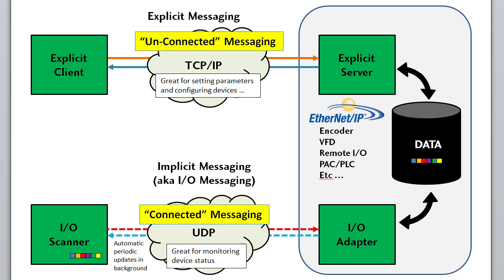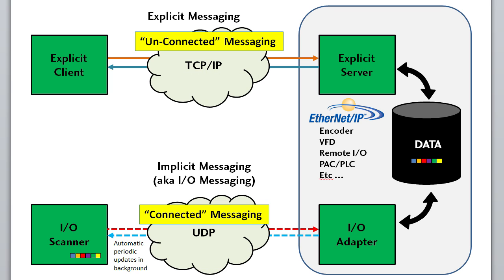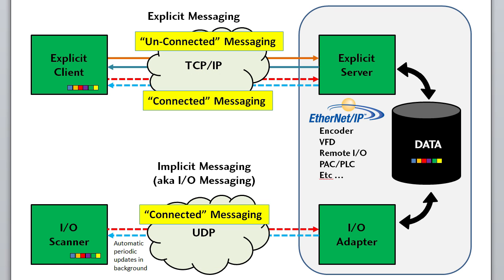The explicit protocol can also do connected messaging, where both ends know exactly what to expect and the data is transferred at periodic intervals in the background. But it still uses TCP/IP with all that extra communications baggage built into the message, so it's not nearly as efficient as the implicit version of connected messaging — but it is available for you to use if you want.